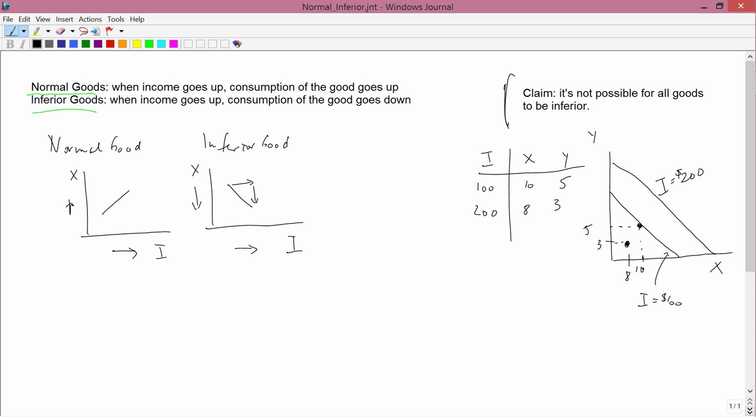So this is an inconsistency in behavior. When your income is 100, you bought 10, 5. You could have bought 8, 3, but you didn't. So economists would say 10, 5 is revealed preferred to 8, 3 because your behavior reveals that you must have preferred 10, 5 to 8, 3 because you were able to consume both of them and you chose to consume 10, 5 instead of 8, 3.